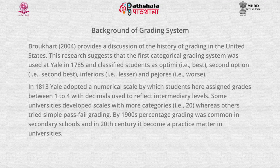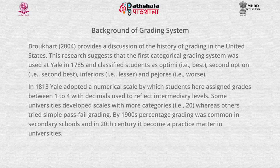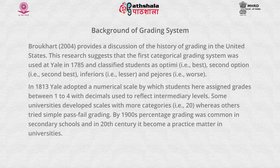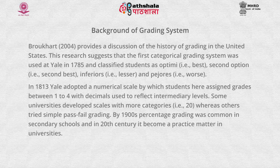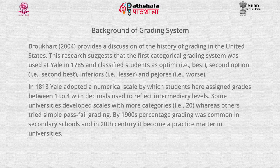In 1813, Yale adopted a numerical scale by which students were assigned grades between 1 to 4, with decimals used to reflect intermediary levels. Some universities developed scales with more categories such as 20, whereas others tried simple pass-fail grading. By the 1900s, percentage grading was common in secondary schools and in the 20th century it became common practice in universities.